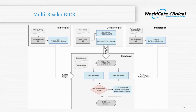In contrast, the multi-reader Blinded Independent Central Review, BICR, approach is a one-way hierarchical communication where results of one or more reviewers feed into the next assessment, as can be seen with the radiology, pathology, and dermatological results going into the oncologist.